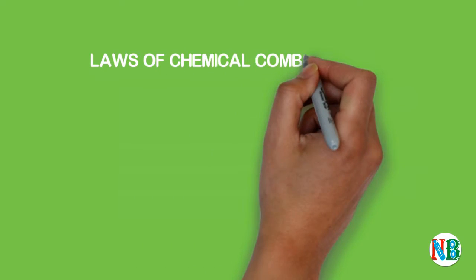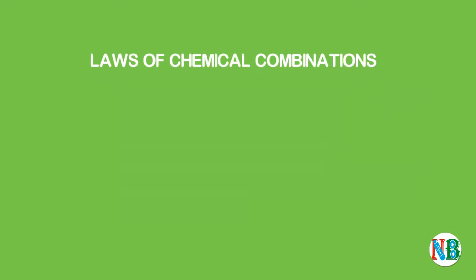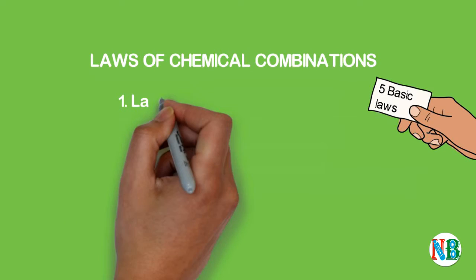Laws of chemical combinations. The combination of elements to form compounds is governed by five basic laws. They are: